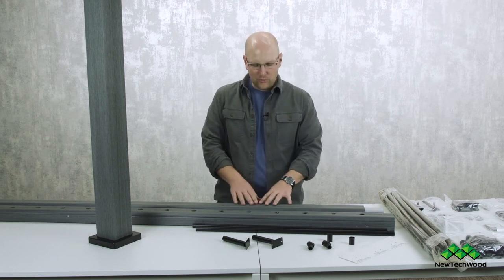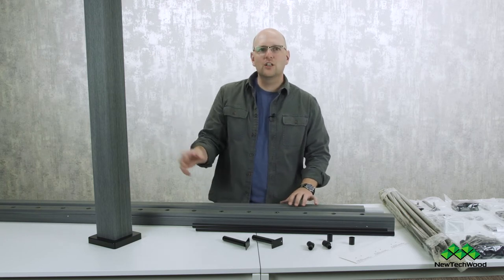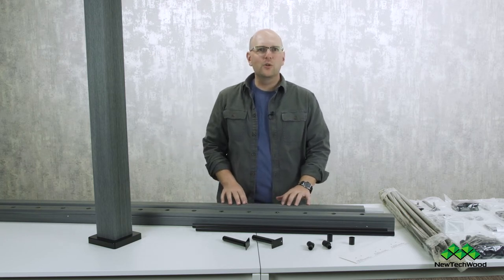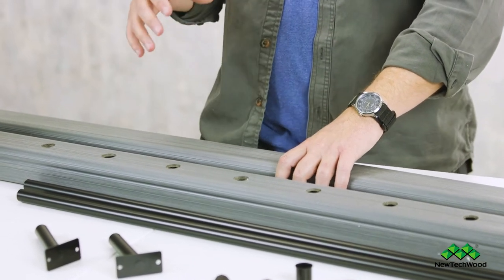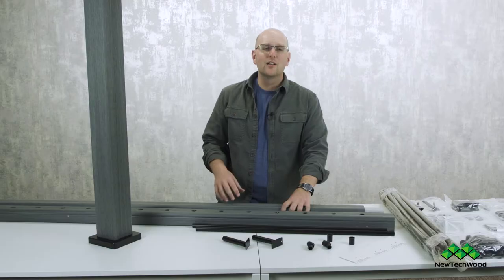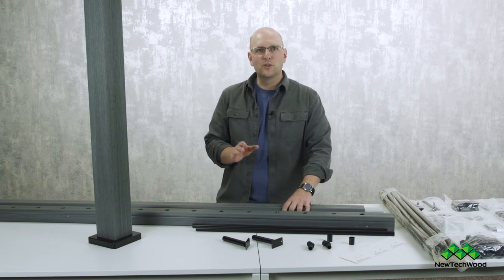Now this system with the railing and the post that you see here is made of our blend of recycled plastic and wood fibers. So again like most NewTek Wood products this is a really great one to use if you're doing a green build.